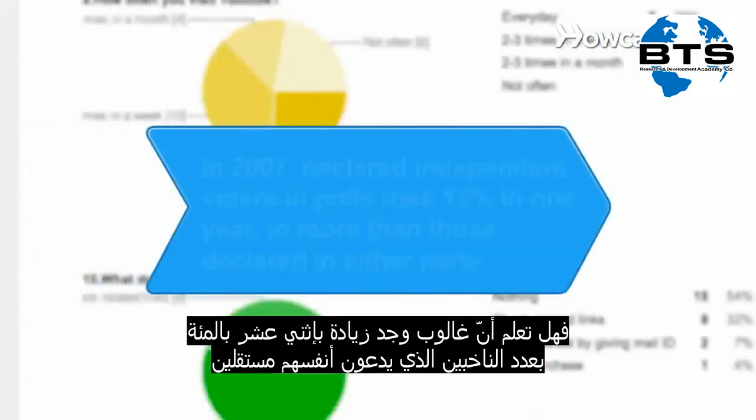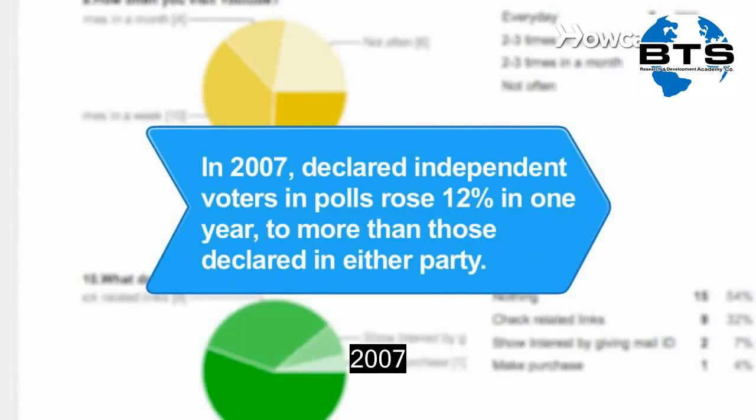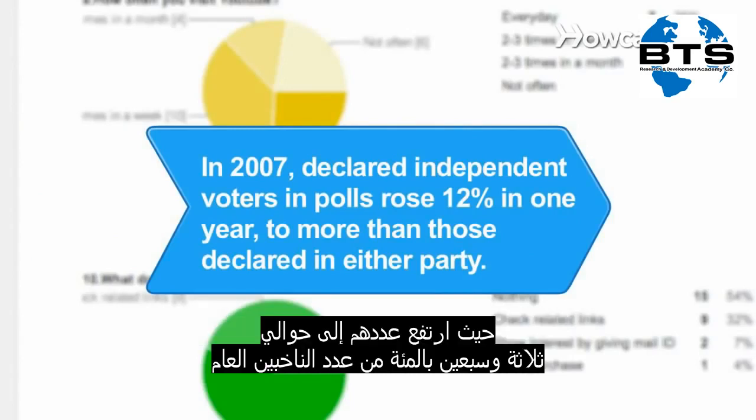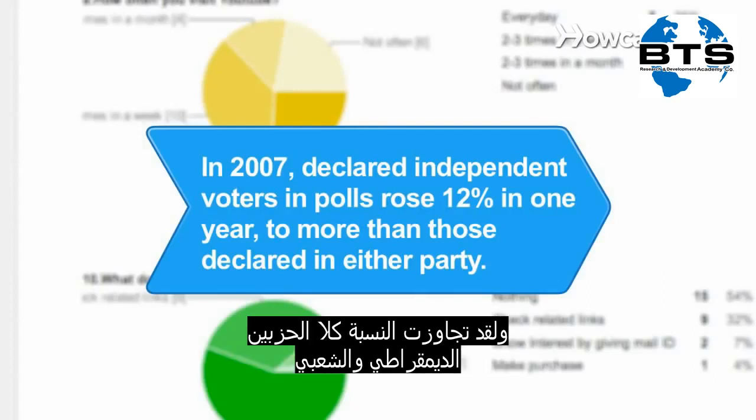Did you know Gallup found a 12 percent increase in voters who call themselves independents between elections in 2007, when their numbers rose to 37 percent of the voting public — more than either Democrats or Republicans?